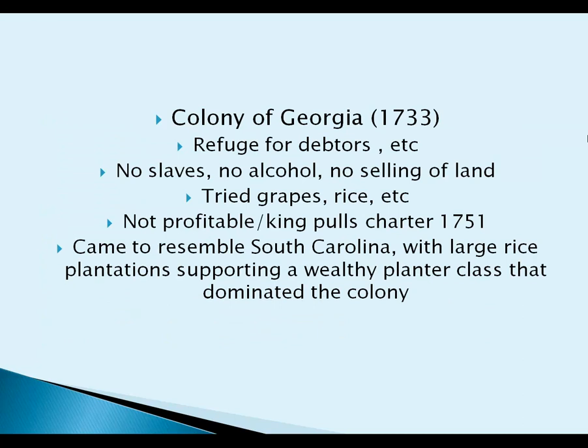Slaves working the rice fields under task labor had more free time and less contact with white people, which allowed a distinctly African-American culture to develop. Georgia, established in 1733 as a refuge for debtors and a buffer against Spanish Florida, tried growing grapes, rice, and silk but nothing worked. It prohibited slaves, alcohol, and land sales over 50 acres, and it was unprofitable. In less than 20 years the king revoked the charter, it became a royal colony, all restrictions were lifted, and it quickly came to resemble Carolina — dominated by a large wealthy white planter class.